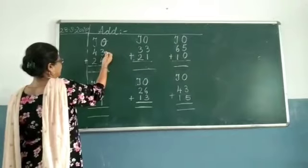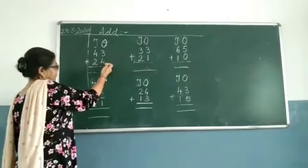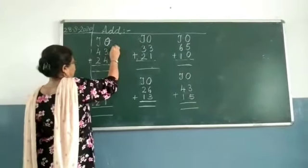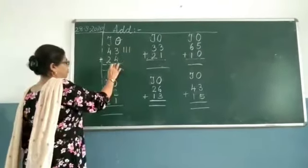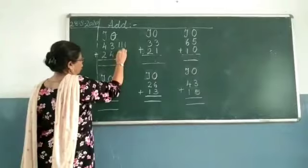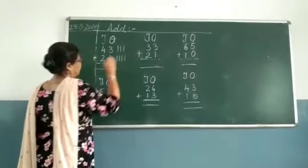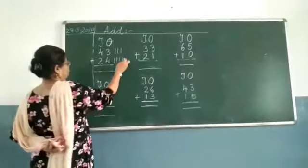Now what is this number on this side? 3 plus 4. So for 3 you are going to draw 3 lines and for 4 you are going to draw 4 lines. Then you can count all. Count them all together.